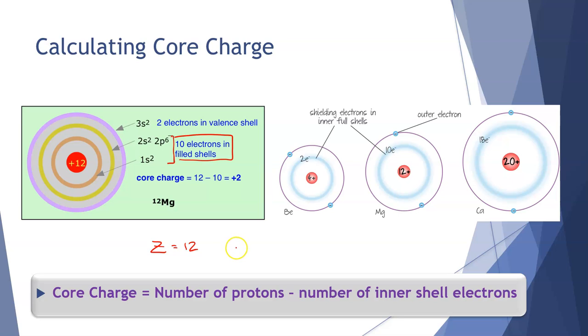So our core charge is going to equal 12 minus the 10 shielding, so it will have a plus 2 core charge. This means that the electrons in the valence shell are drawn towards the nucleus with a force equal to about a plus 2. This gives us an idea of the magnitude of the force.